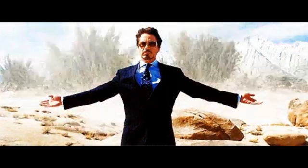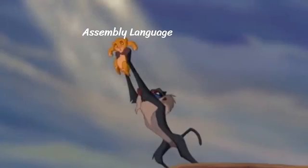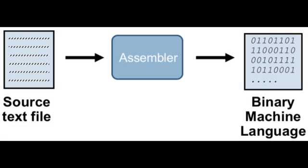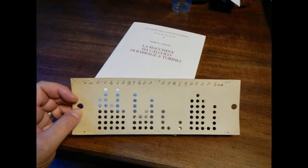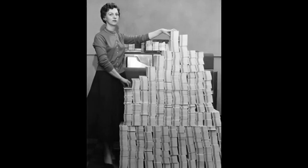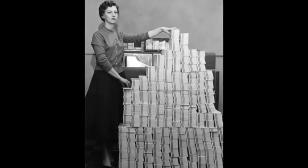Then came the first real step toward easier programming: assembly language. Instead of typing endless zeros and ones, you could write something much simpler to read and write. But who wrote the first assembler — the program that translates assembly into machine code? Here's the crazy part: they wrote the assembler by hand in raw machine code, all zeros and ones. And they didn't type it on a keyboard — they used a punch card machine, like a typewriter that punches holes into cards. Each card represented one assembly instruction, and a stack of cards became the full program, which was fed into the computer to run the assembler.